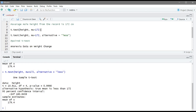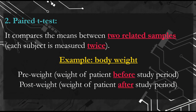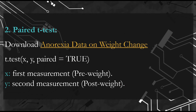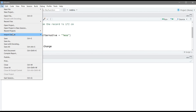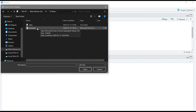Now let's look at the paired t-test, which compares the means between two related samples where each subject is measured twice. For example, body weight measured before the study (pre-weight) and after the study (post-weight). For this example, we will download a dataset from a website, use the t.test function with the argument paired equal to TRUE, and use x for the first measurement (pre-weight) and y for the second measurement (post-weight).